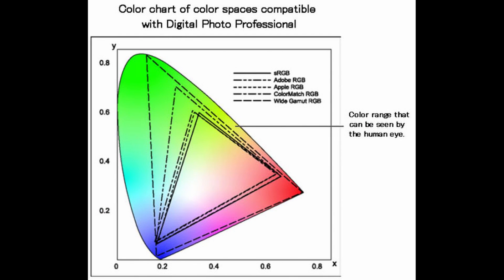Here's a diagram: the outline of the rainbow area is what the eye is capable of seeing. Inside that you'll see different triangular areas — those are different color spaces, representing what technology is able to show. Certain cameras, phones, and devices have more advanced color spaces and displays more capable of showing these colors than the average phone or monitor. Graphic designers and photographers who are sensitive to color pay more money for better quality monitors with a higher quality technology to display these colors, covering a broader range of the color space.